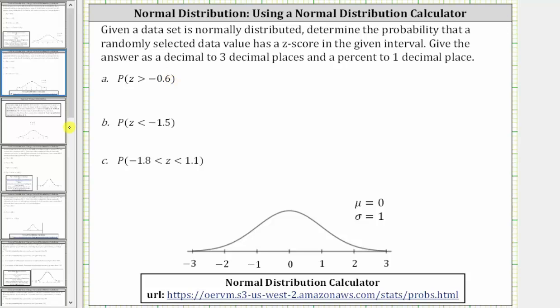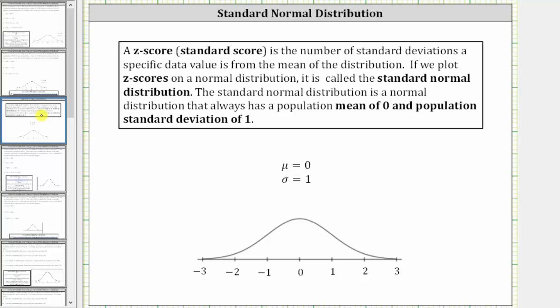For a quick review, a z-score or standard score is the number of standard deviations a specific data value is from the mean of the distribution. If we plot z-scores on a normal distribution, it is called the standard normal distribution. The standard normal distribution is a normal distribution that always has a population mean of zero and a population standard deviation of one.